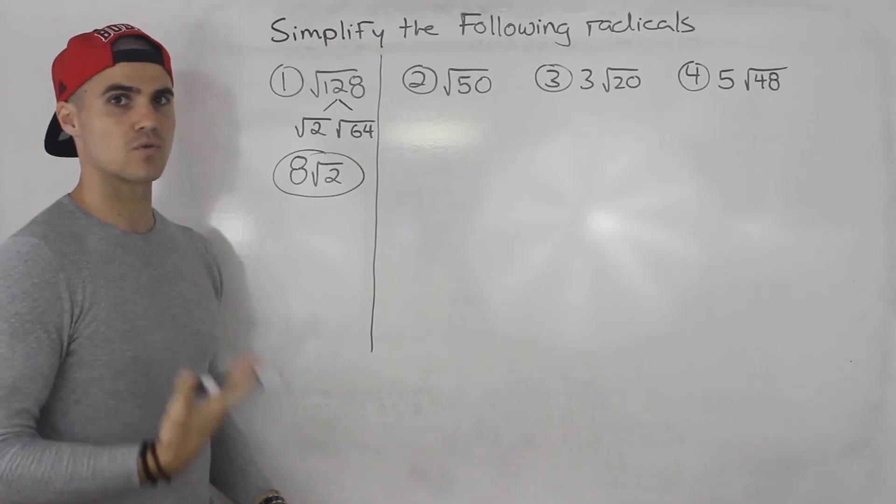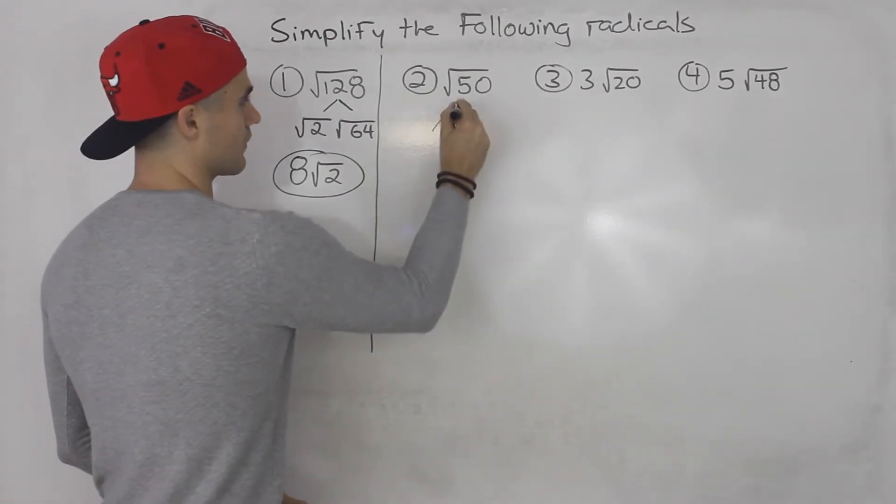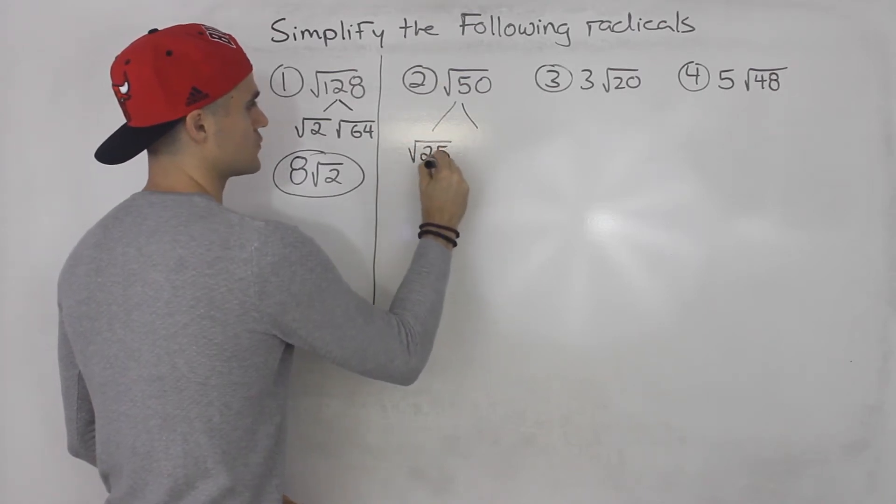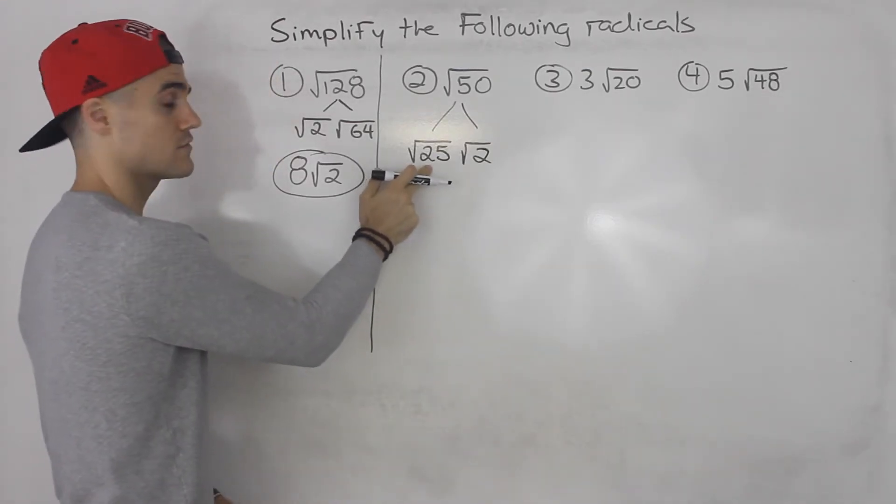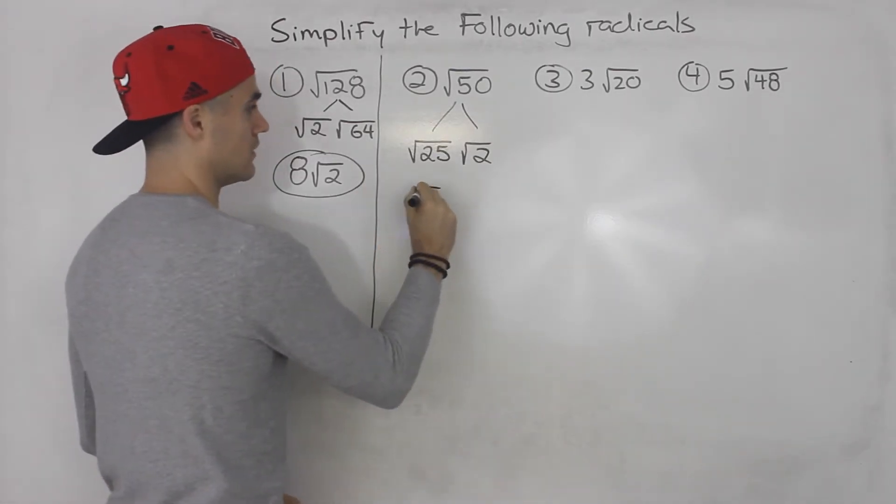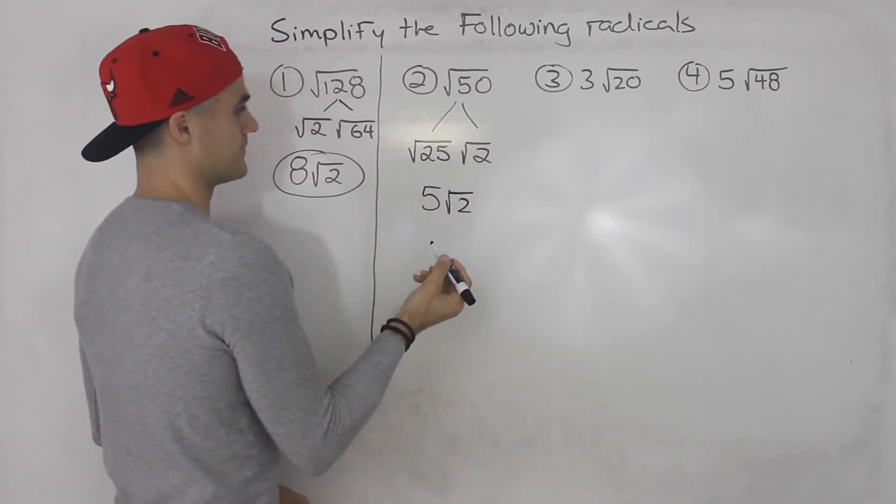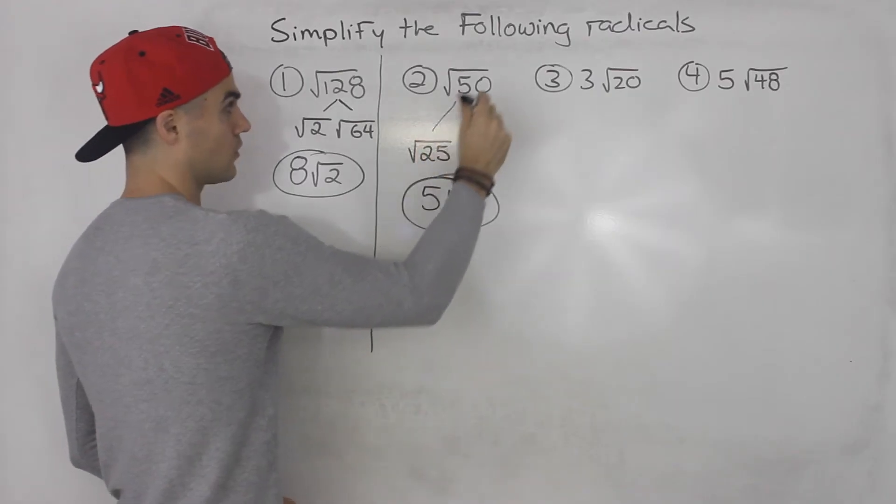Moving on to number 2, we got the square root of 50. Well, 50, that can split up into root 25 times root 2. And we know root 25, that's a rootable number. That's just 5. And then the square root of 2. Can't do nothing about that. So that is the final answer for root 50.